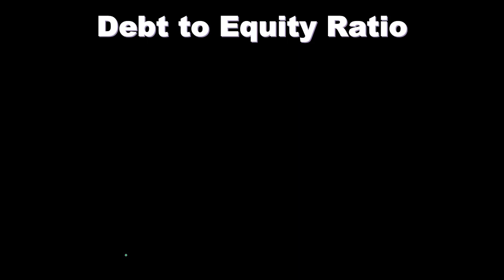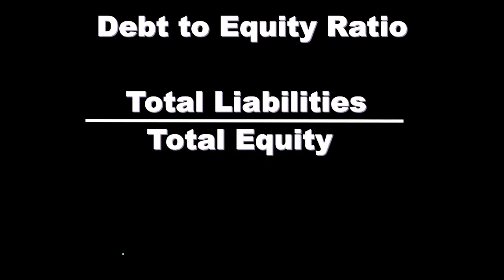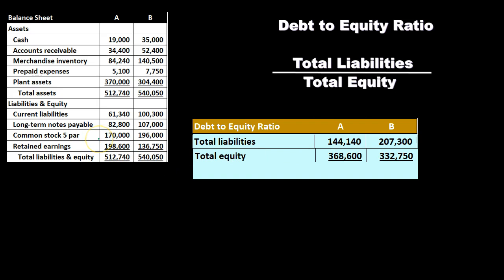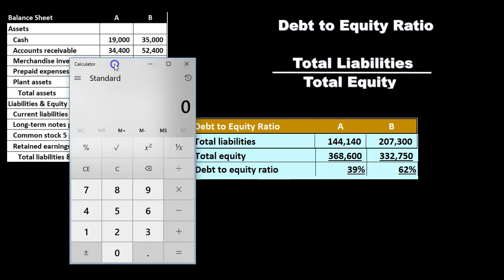Next is the debt-to-equity ratio, which is similar but slightly different. Here we take total liabilities and divide by total equity — not by total liabilities and equity. The denominator is just the equity, which you can think of as the book value of the company: assets minus liabilities equals equity. So we're comparing the debt to what the owner essentially has claim to.